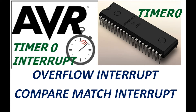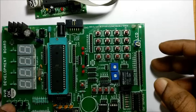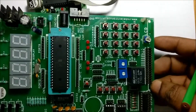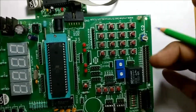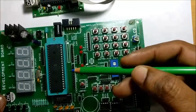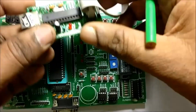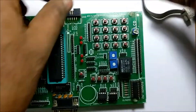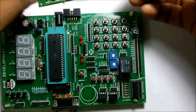Hello all. This is the second video on AVR interrupts. In this video we will explore the Timer 0 interrupts. We will be using ATMega 16 on the AVR development board and USB ASP is used as ISP programmer.